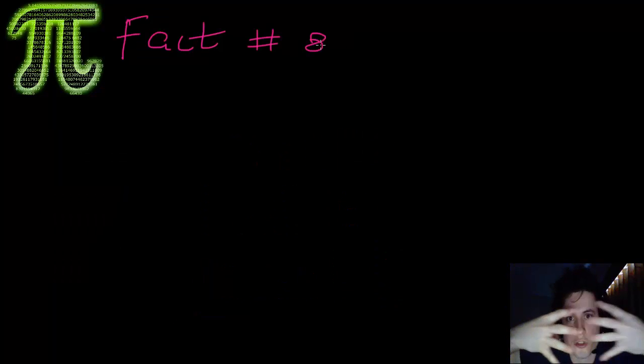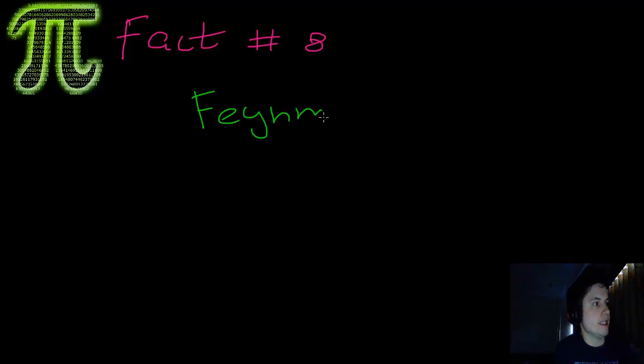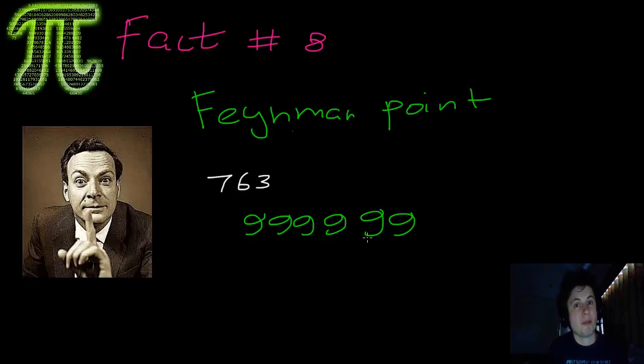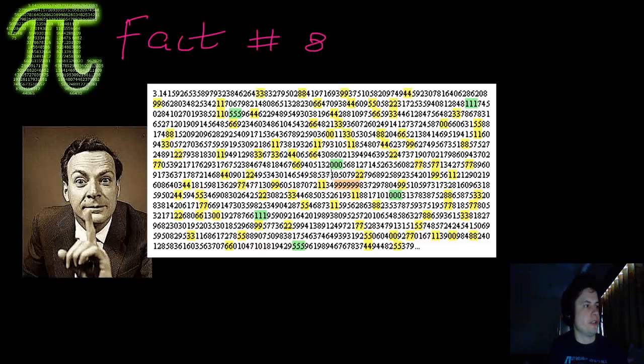Fact number eight. Let's talk about something called Feynman Point. It's named after this guy, Richard Feynman, a famous physicist. He discovered that at position 663, if you look at Pi, there's actually a repetitive sequence of number nines: nine, nine, nine, nine, nine, nine, which kind of suggests Pi might be rational, but it's not. It's just a random occurrence. His goal was to learn Pi up to this digit so he could recite it and then go nine, nine, nine, nine, nine, nine. This is known as Feynman Point. This is the Pi number up to position 663 where it repeats nines.